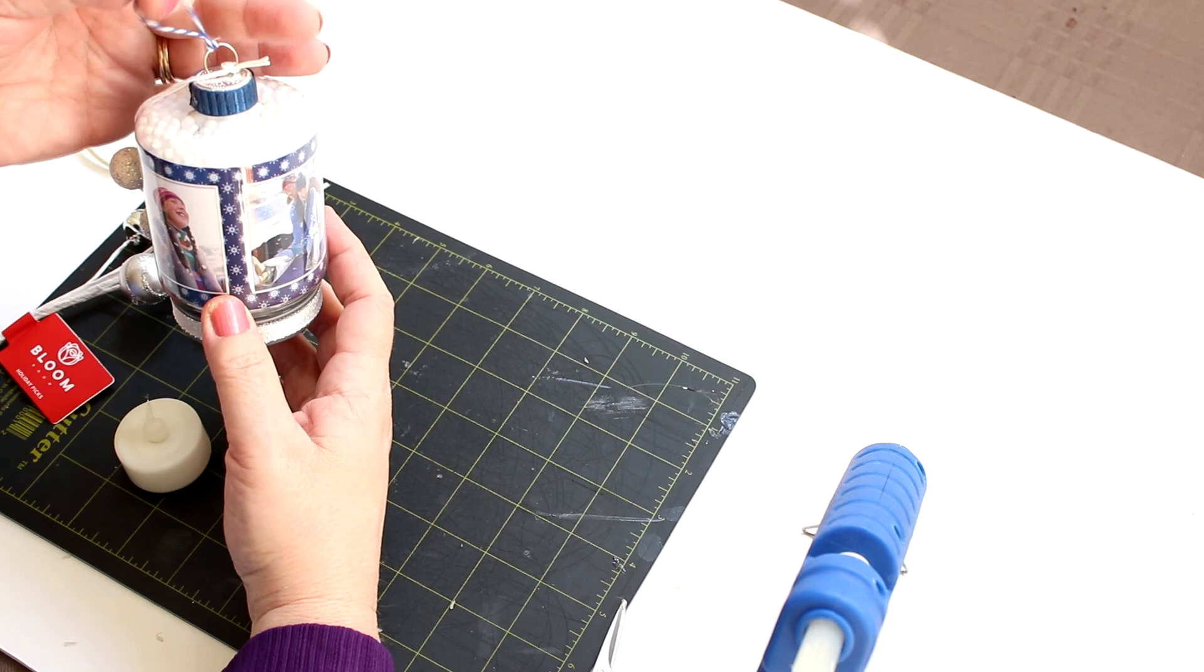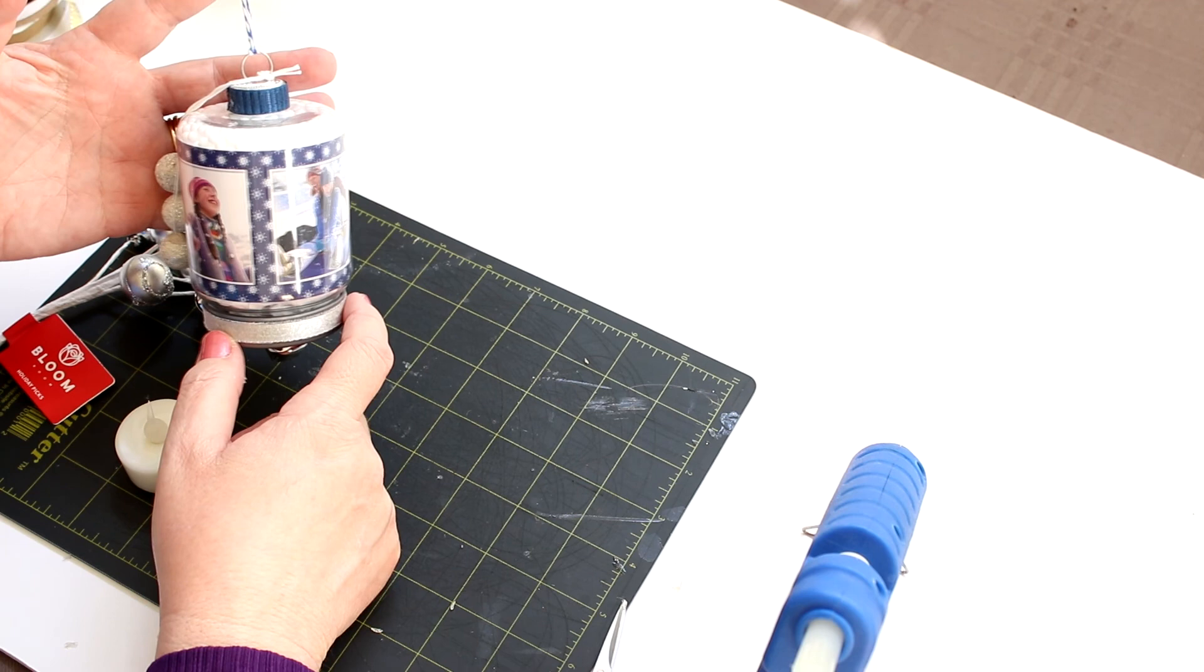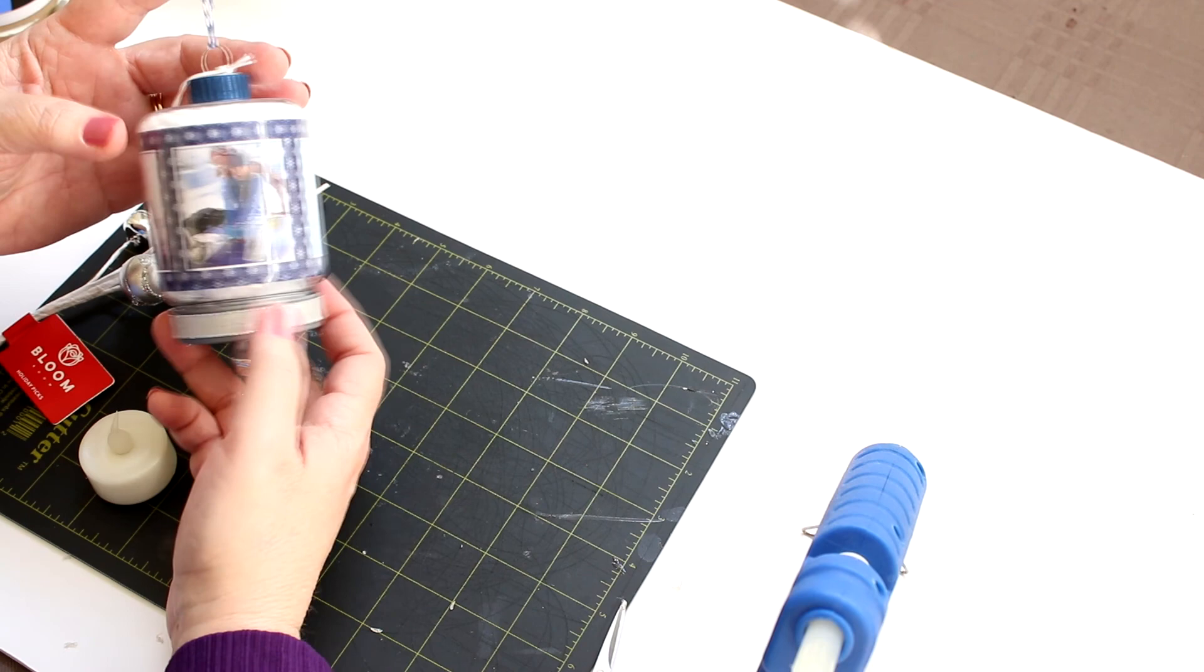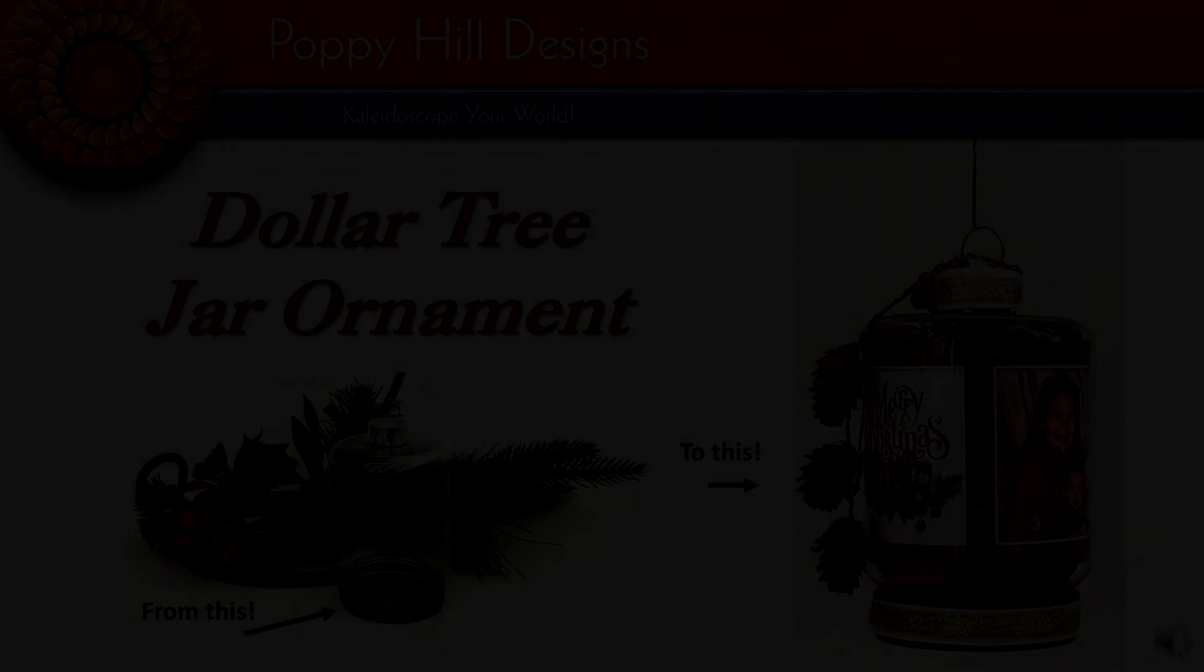So I hope this has inspired you to try making one of these ornaments. The templates are available on our website, PoppyHillDesigns.com. I'll put a link in the description box below. And we do have 12 different designs that you can choose from. I hope you enjoyed this tutorial and have all the information needed to create your own ornaments.